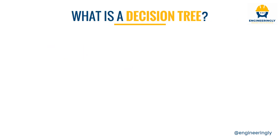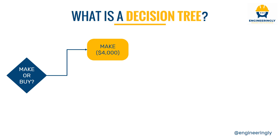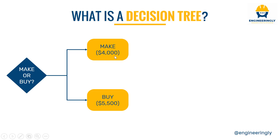For example, assume you have a scenario to either make or buy something. If you make it, the cost is four thousand dollars. If you buy it, you pay five thousand five hundred dollars. The make option is lower because you use in-house resources. If you make it, there is a 65% probability of making a profit of fifteen thousand six hundred dollars, and a 35% probability that it fails and you lose six thousand four hundred dollars.